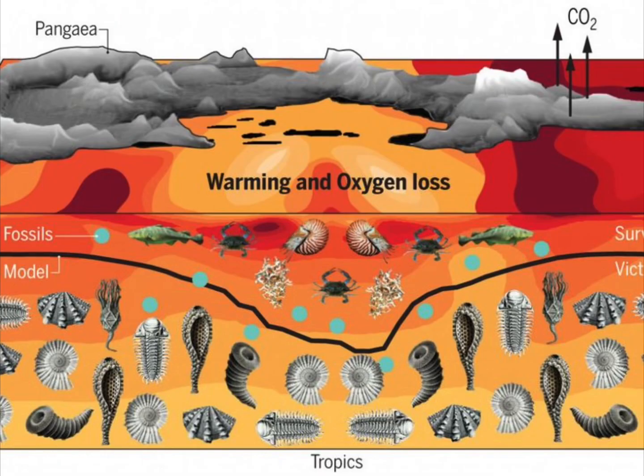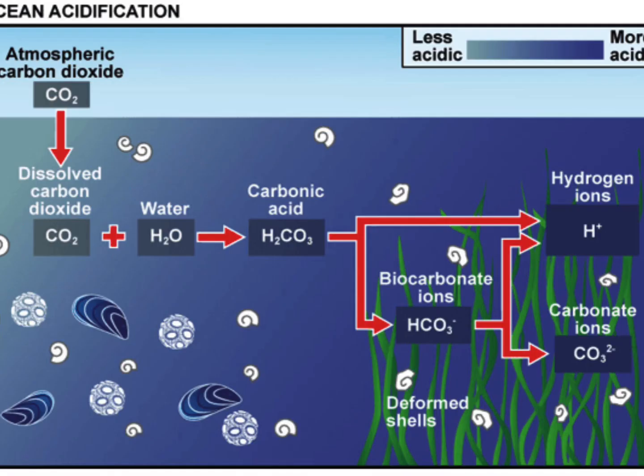There was a period of extreme volcanic activity which caused the climate to warm and dumped a lot of CO2 into the atmosphere. Superhot temperatures increased the ocean temperature, and a lot of CO2 dissolved in water leads to the acidification and warming of the oceans — a recipe for marine animal extinction. 70% of all vertebrate species also went extinct at this time.